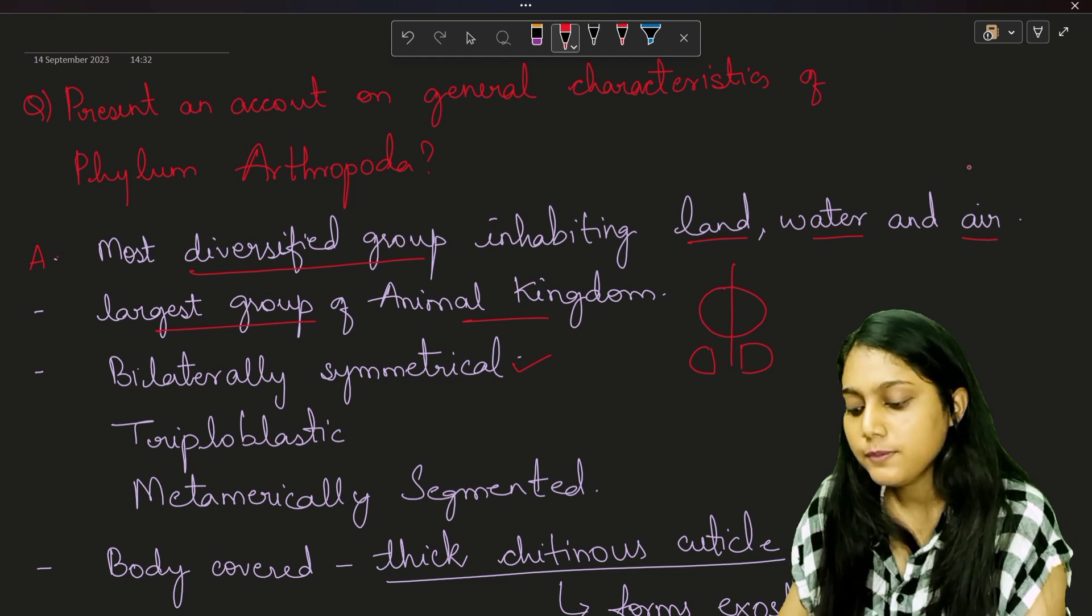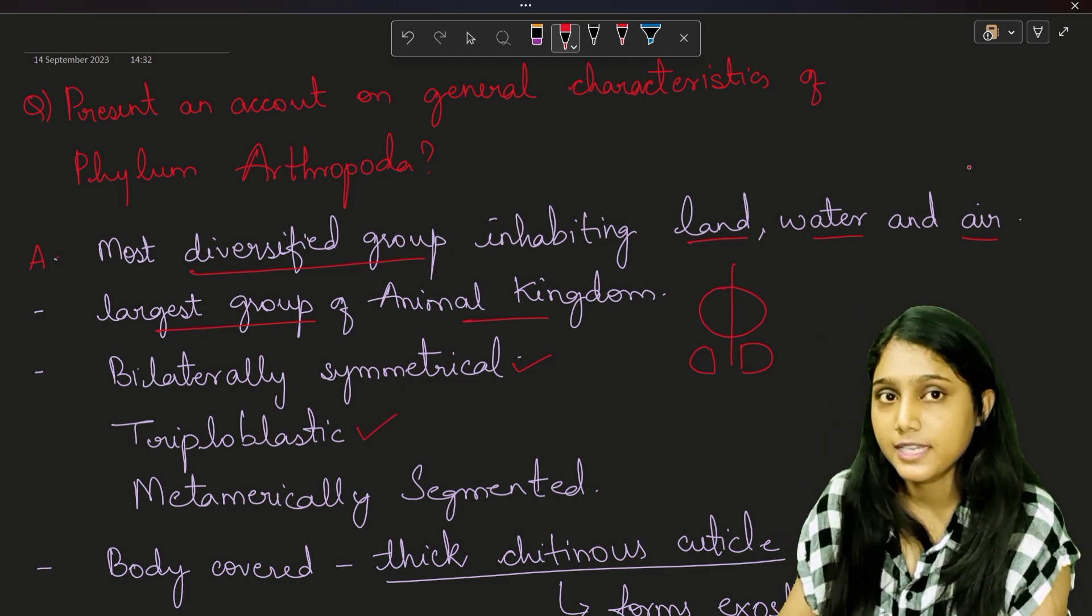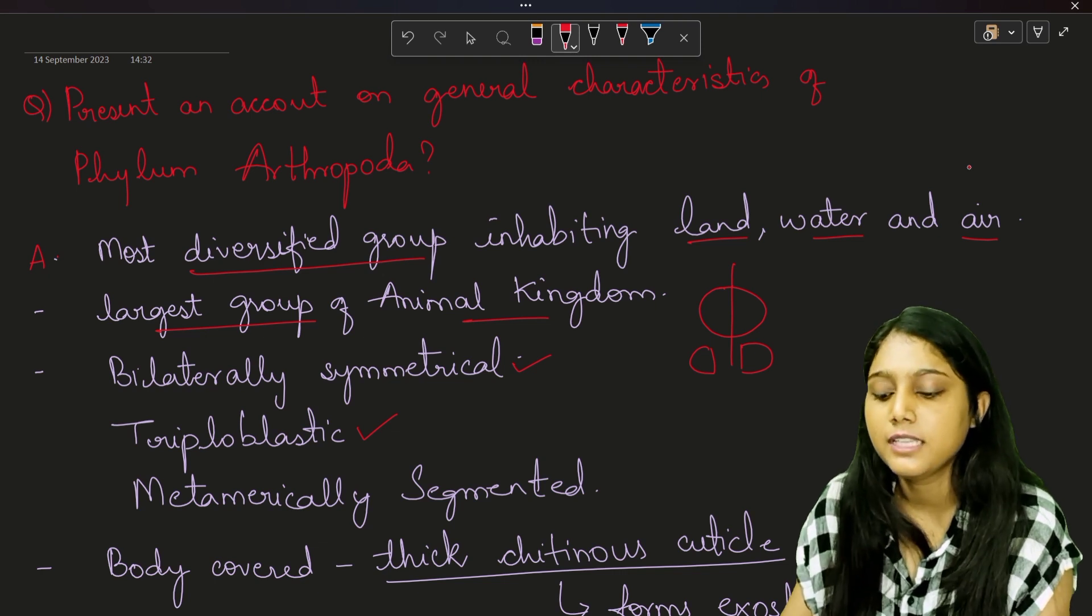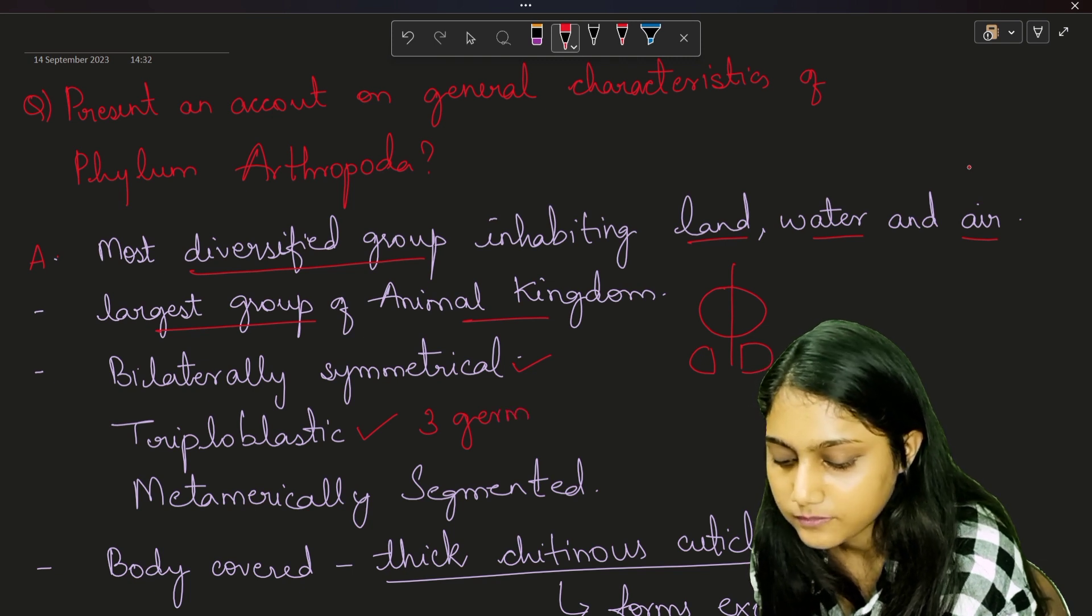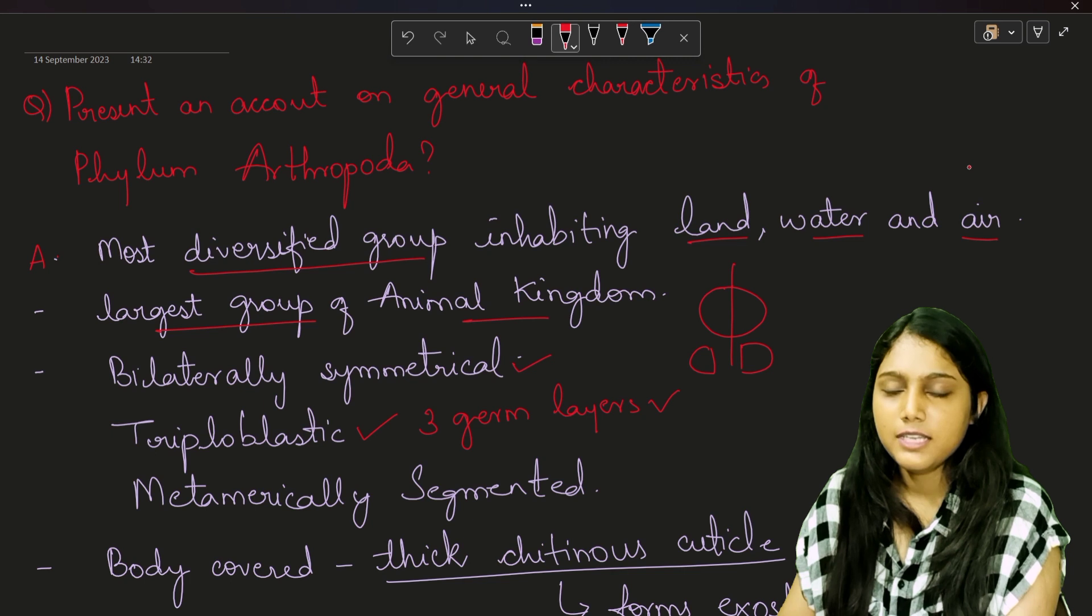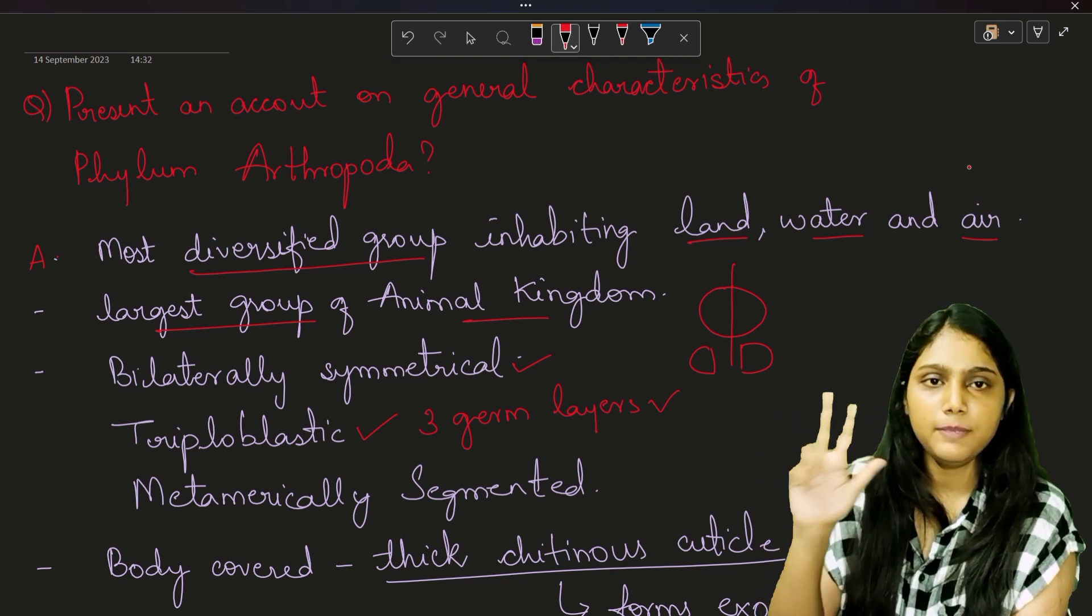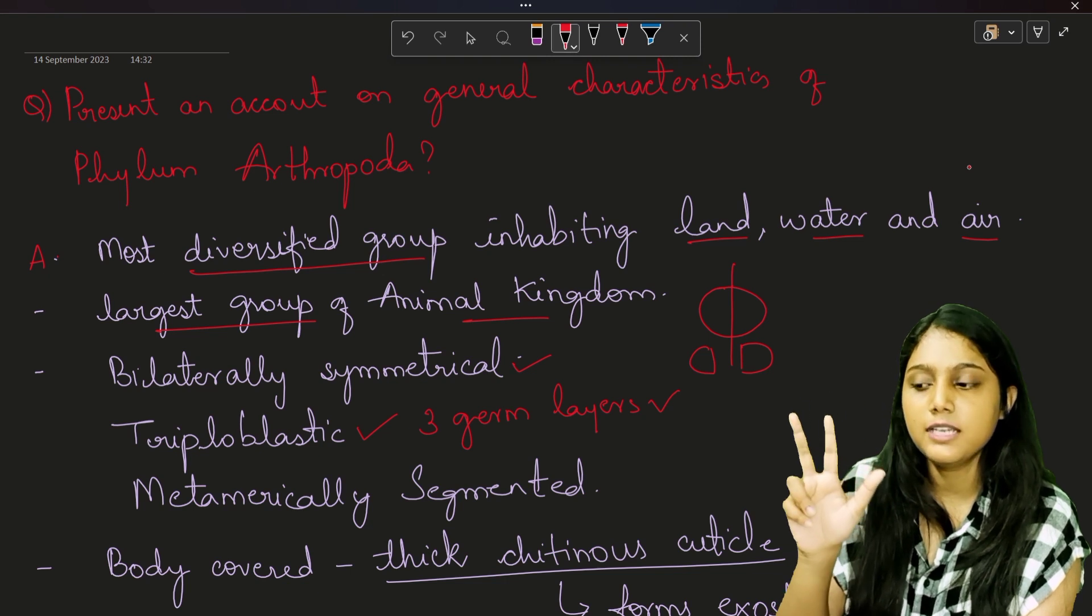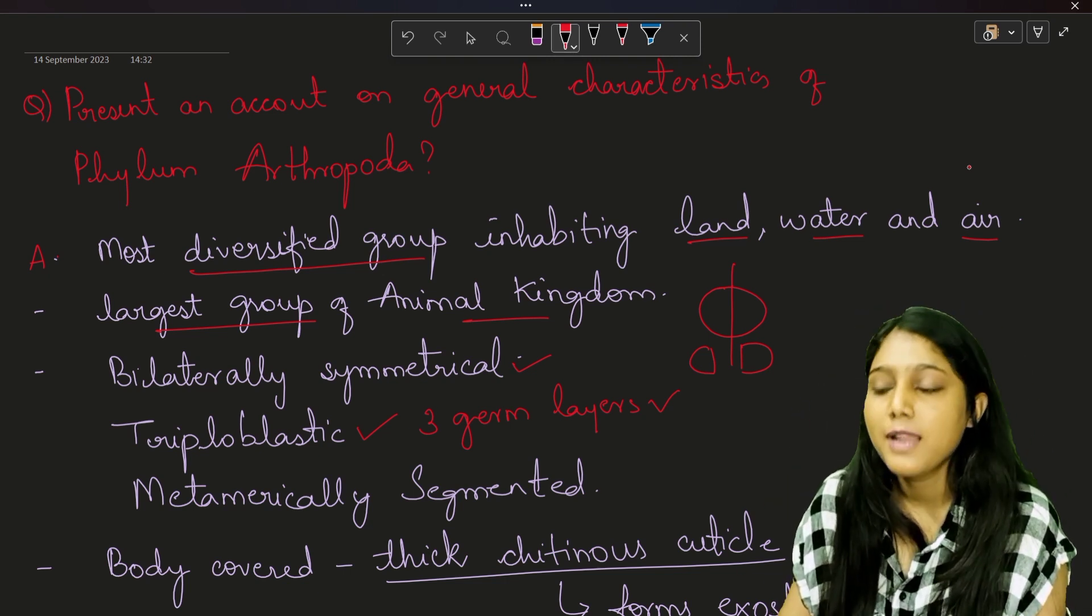Next we will talk about triploblastic organisms. Now what do you mean by triploblastic organisms? Triploblastic means they have three germ layers present. Now what are these three germ layers? Outer ectoderm, inner endoderm, and under these two mesoderm. If these germ layers are present then such organisms are called as triploblastic organisms.